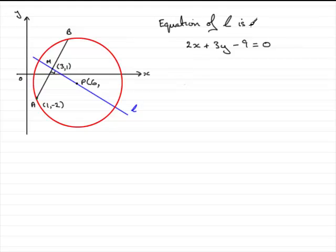Well we know that p lies on the line l, we've got the equation of line l, 2x plus 3y minus 9 equals 0.